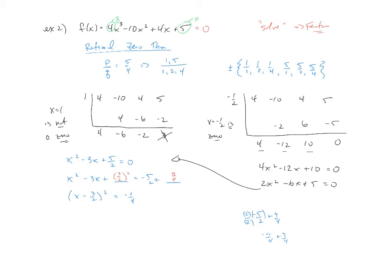So at this point, we can go ahead and square root both sides. So we have x minus 3 halves equals plus or minus 1 half i. And finally, x equals 3 halves plus or minus 1 half i for our final answer.